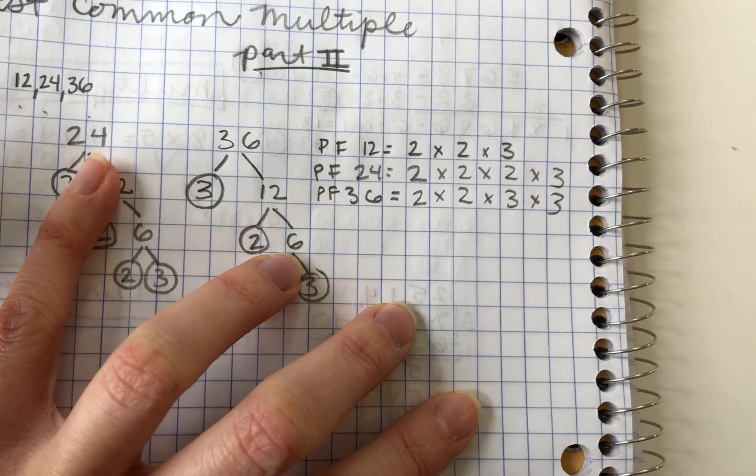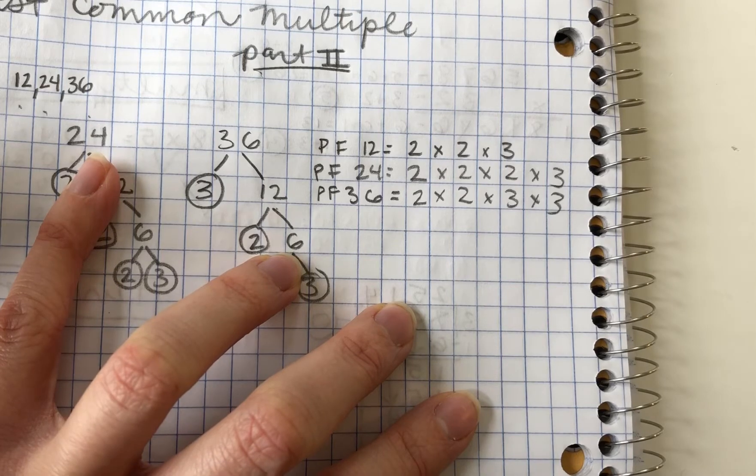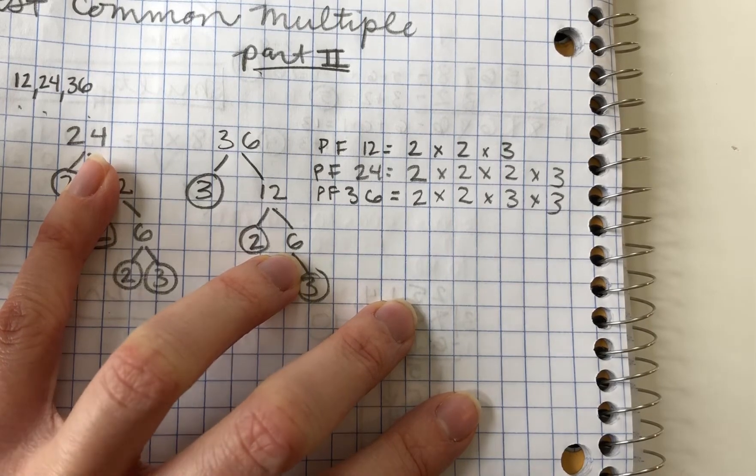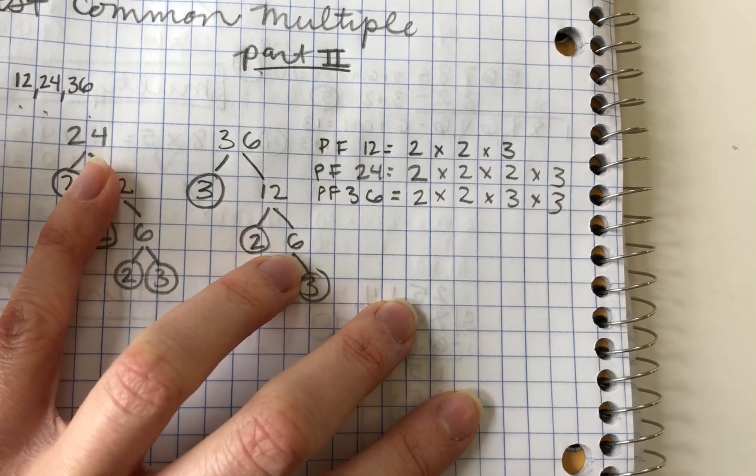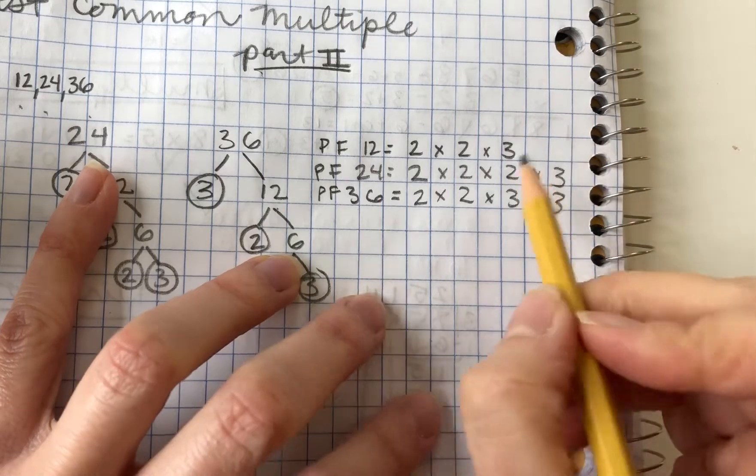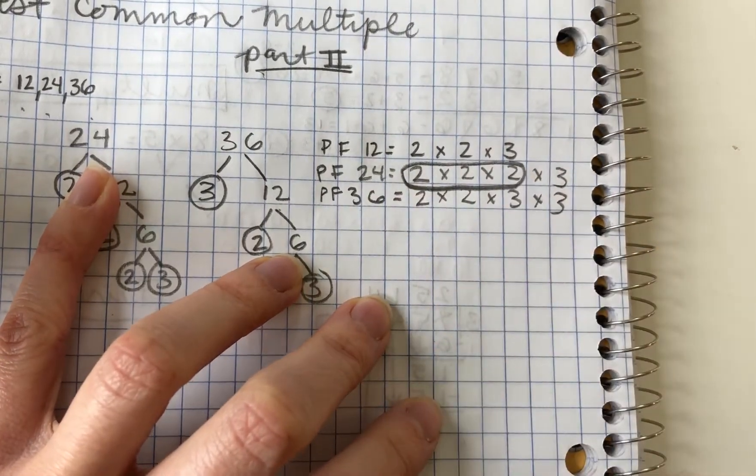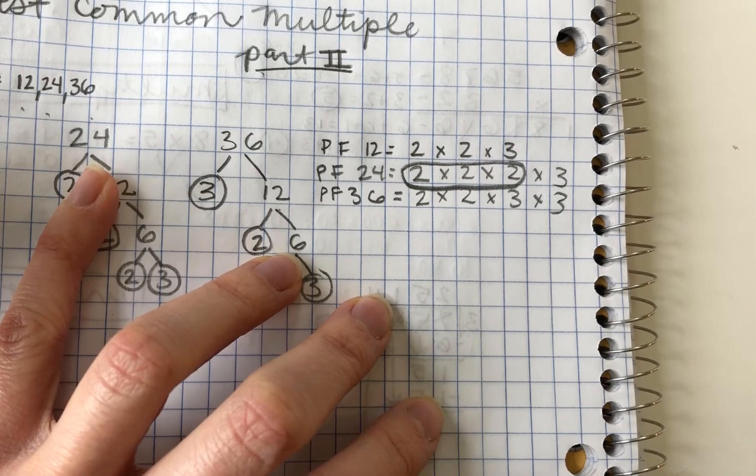So we're going to start at the lowest prime factor here. The lowest prime factor that we see is 2. So what is the most number of times 2 appears in one of our prime factorizations? That's right here. It appears three times in finding the prime factor of 24.